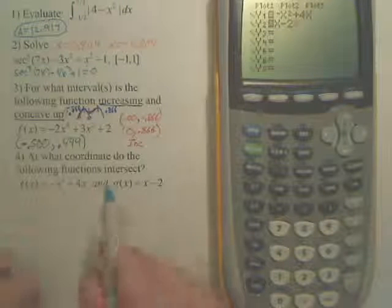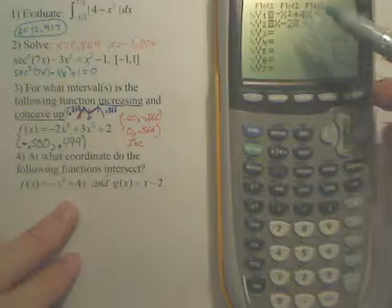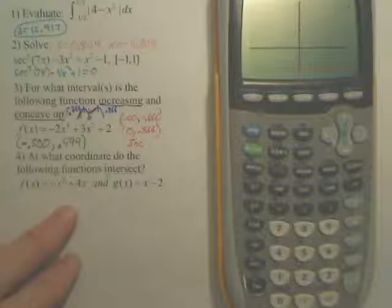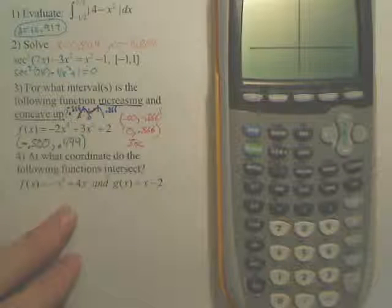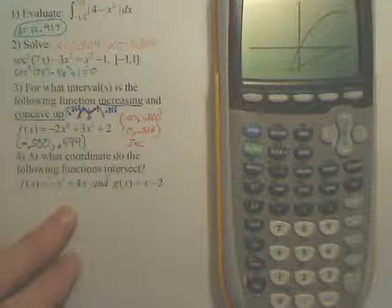If I want to find out the intersection of these two graphs, here they are. If I hit graph, it's graphing both at the same time. They don't show up.